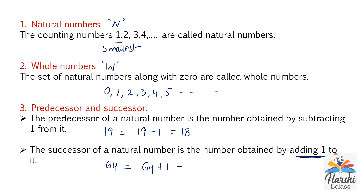To find the successor of 64, we need to add 1: 64 plus 1 equals 65. So 65 is the successor of 64. In short, the predecessor is nothing but the 'before number,' whereas the successor is nothing but the 'after number.'